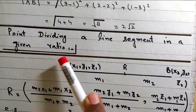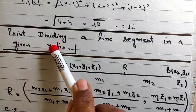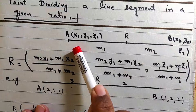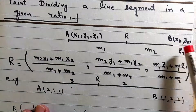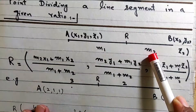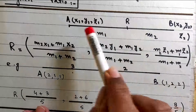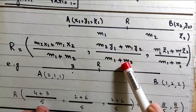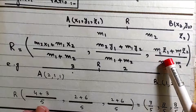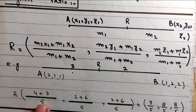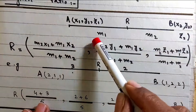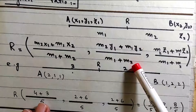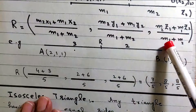Point dividing a line segment in a given ratio. Points A and B have components (x1, y1, z1) and (x2, y2, z2). Point R dividing in ratio m1:m2 has coordinates: first component (m2·x1 + m1·x2)/(m1+m2), second component (m2·y1 + m1·y2)/(m1+m2), third component (m2·z1 + m1·z2)/(m1+m2).